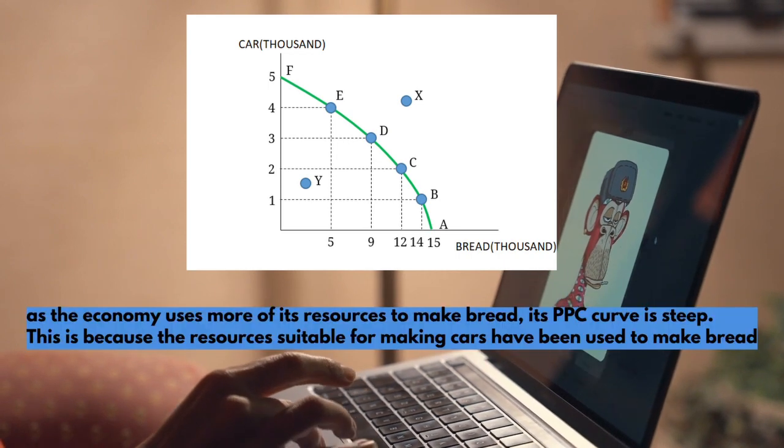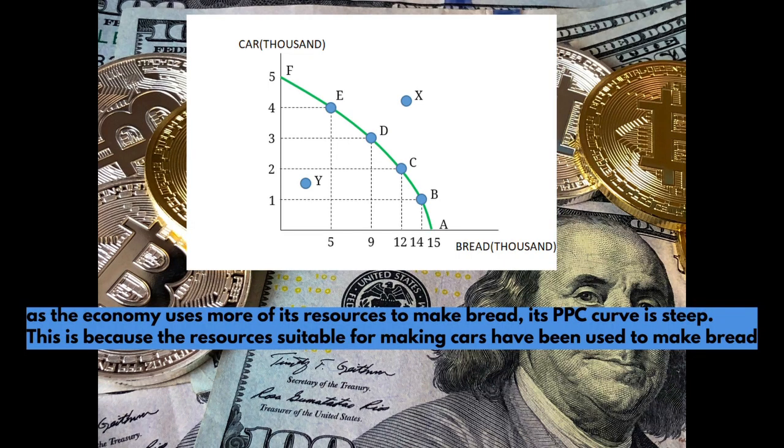As the economy yields more of its resources to make bread, its PPC curve is steep. This is because the resources suitable for making cars have been used to make bread. As a result, any bread sacrifice can result in a large increase in the number of cars. When the resources for making car and bread are more widely used to make cars, then the sacrifice of bread is only able to produce a slight increase in the number of cars.